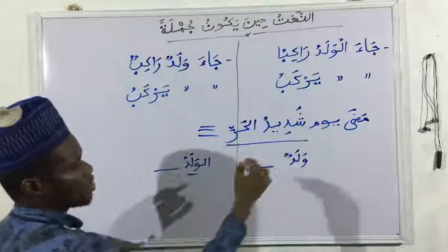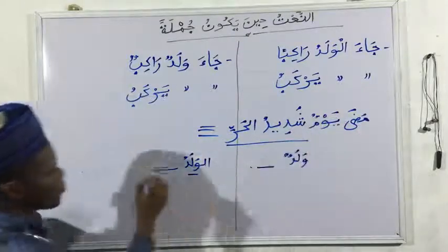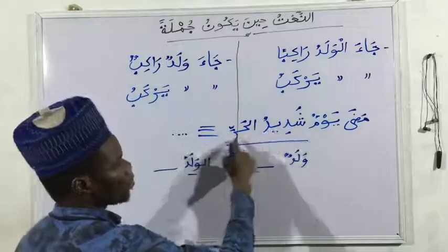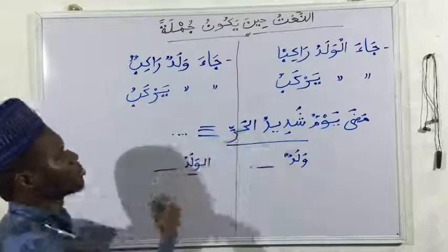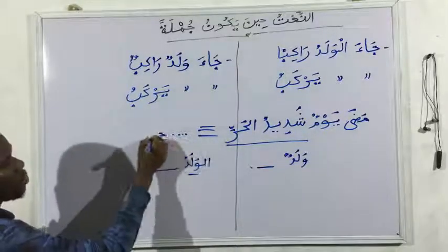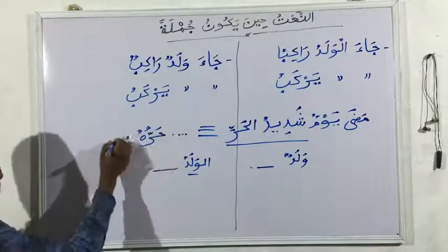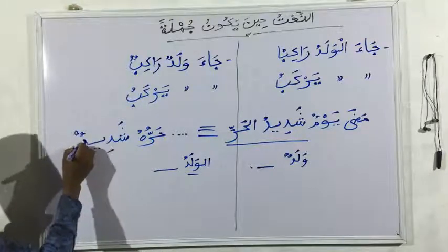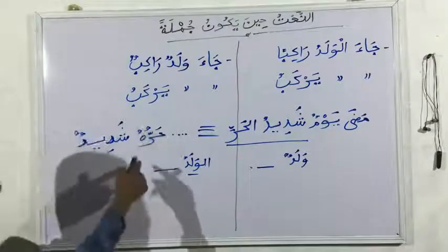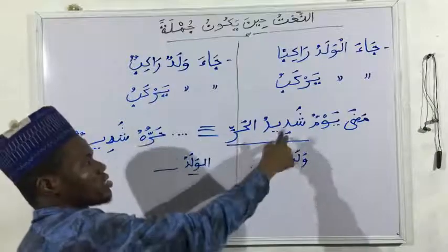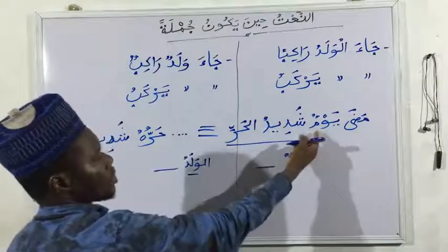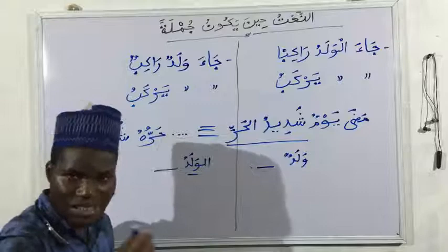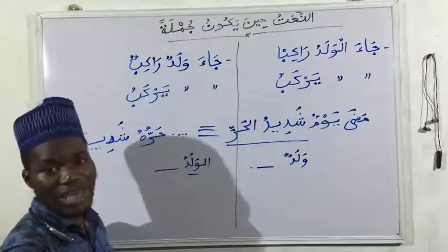So shadidu al-harri — they transform it: the mudaf — harr — now comes forward, and a damir is taken for what it is describing. So harru hu shadidun — its heat is severe. Mada yawmun, harru hu shadidun. A day passed; its heat is severe. This shows us that it is a jumla describing yawmun, which is in nakira state — and that is why it is sifa.